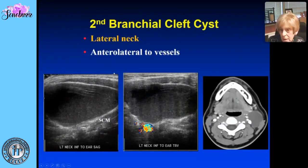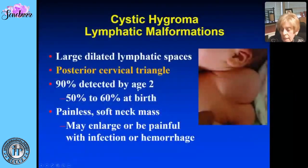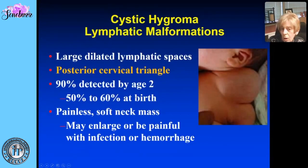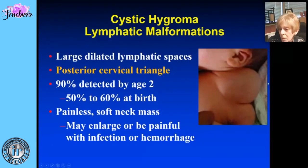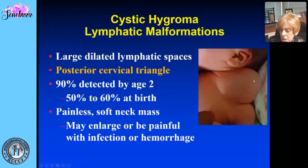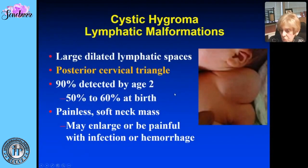Another cystic malformation is cystic hygroma, also known as lymphatic malformation. It simply represents large dilated lymphatic spaces. The key clue: it is in the posterior triangle of the neck — the lesions we just looked at are more anterior. The posterior triangle is the classic site, and 90 percent are detected by age two years.